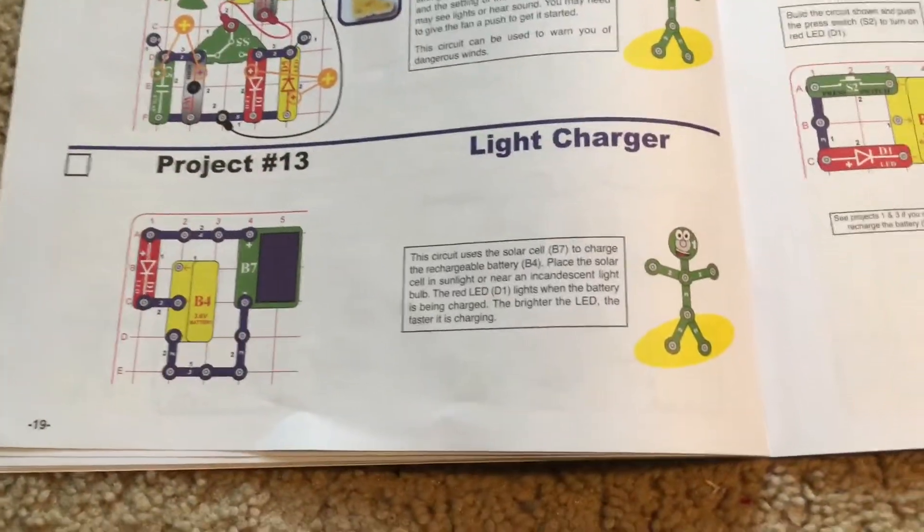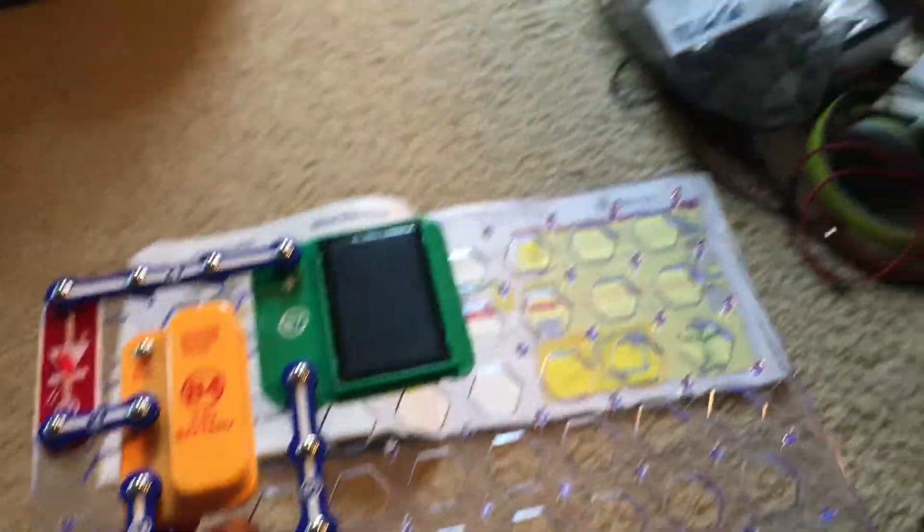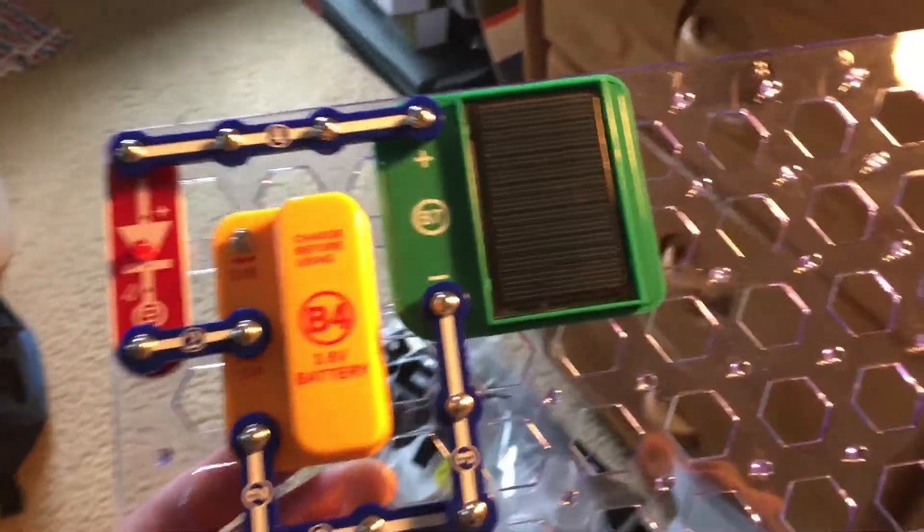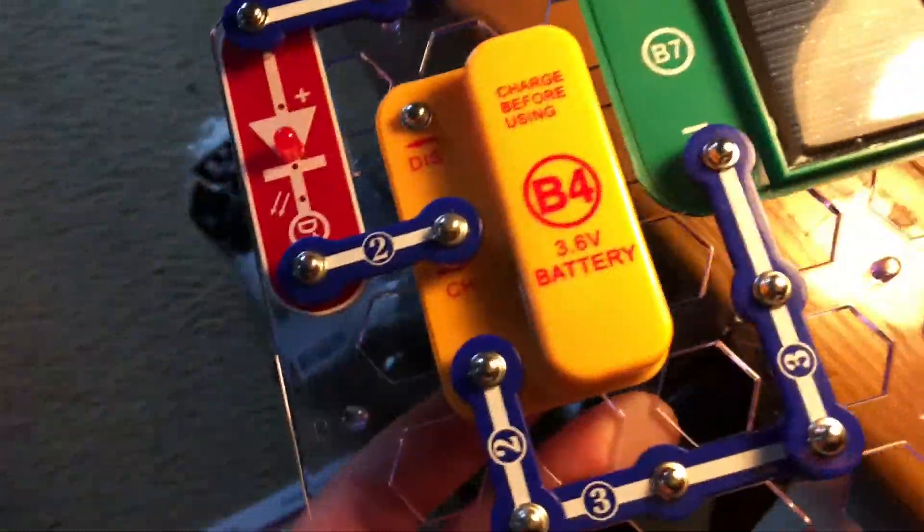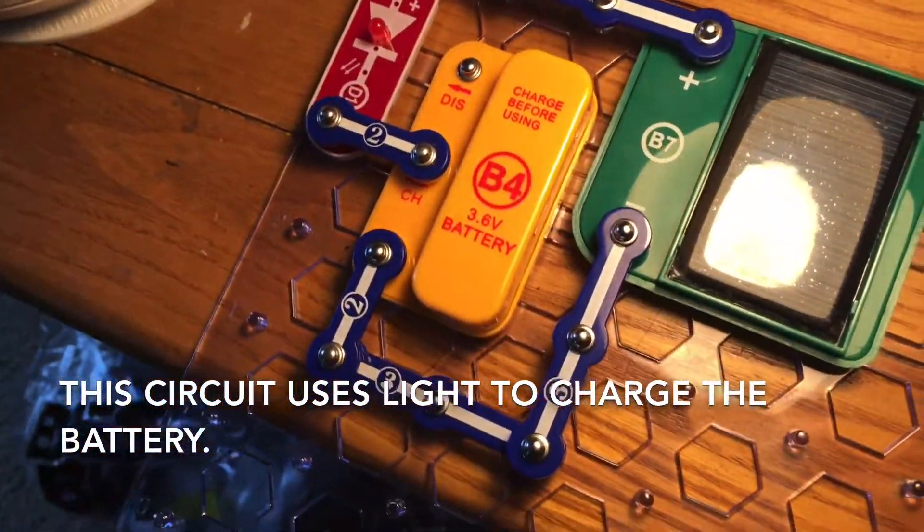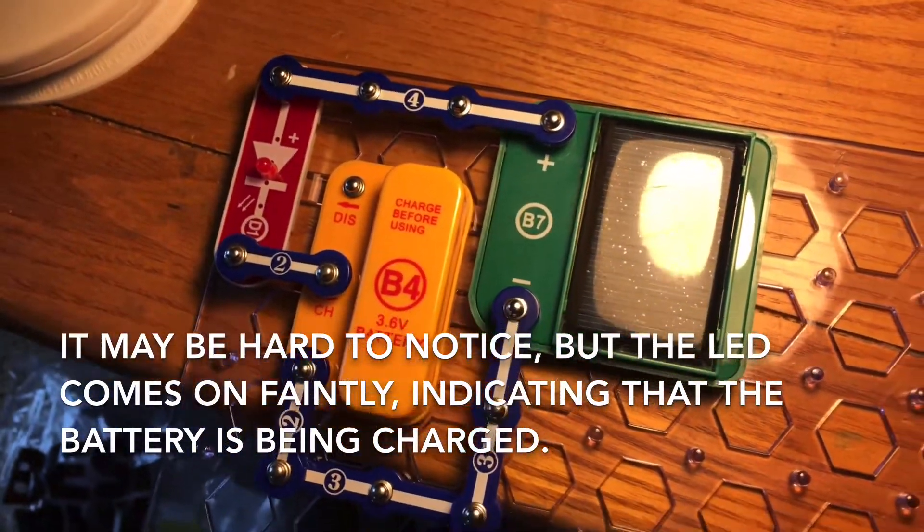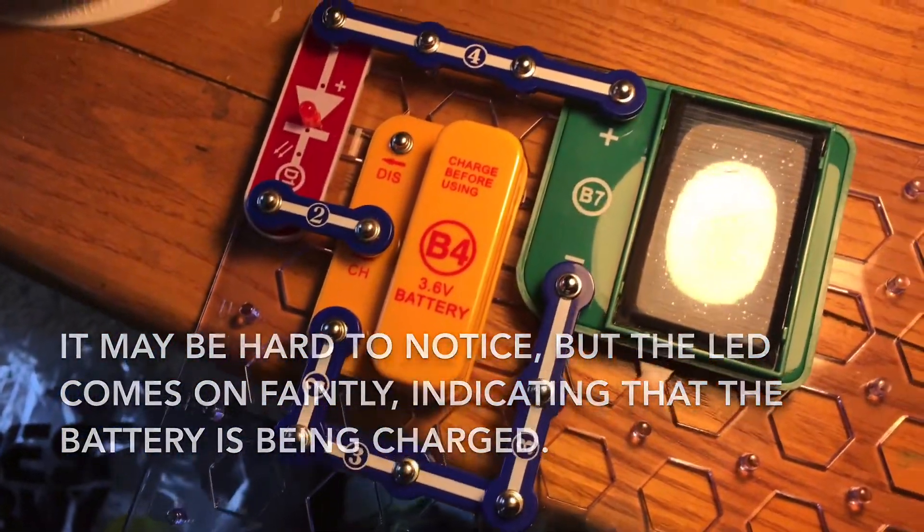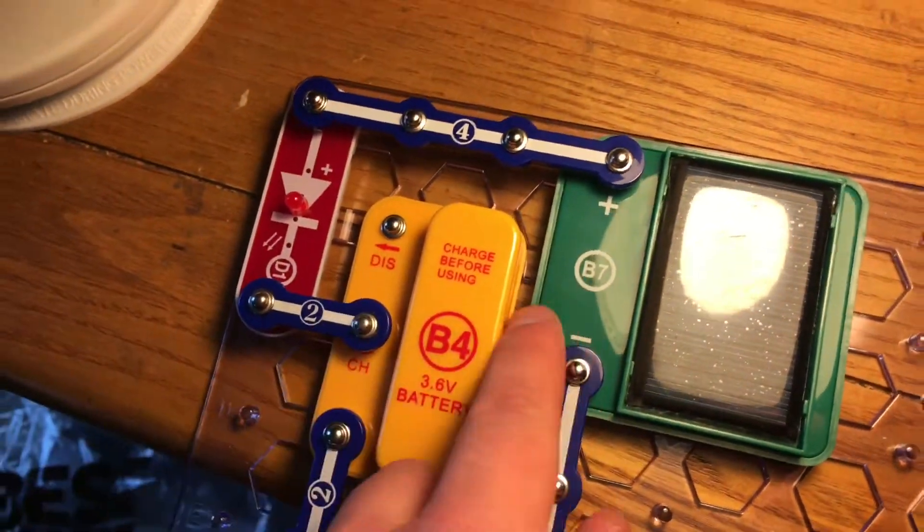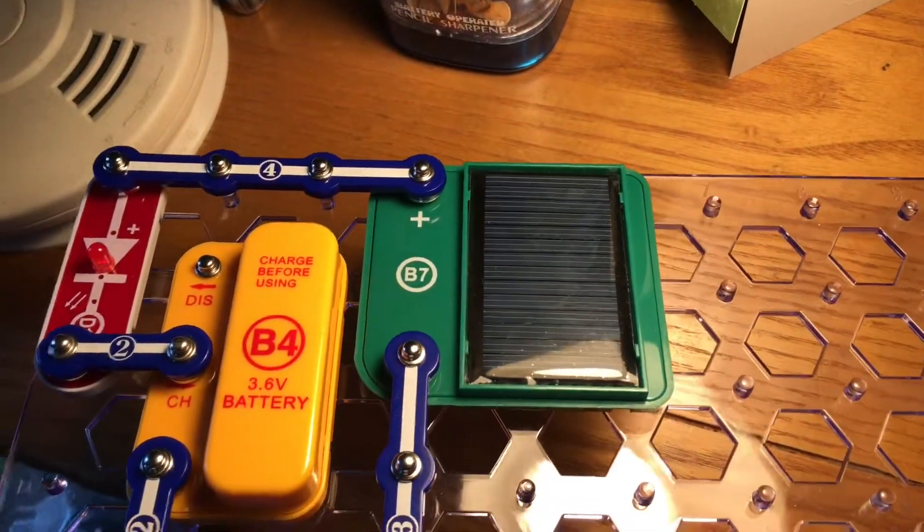Project 13 light charger. This circuit is very simple and we will place it underneath a light source and watch the red LED. The more light the circuit receives then the brighter the LED should get and in turn it's supposed to indicate that the battery is charging. So this circuit relies totally on solar energy to charge the battery.